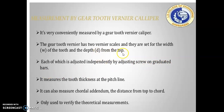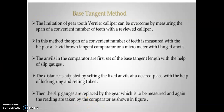The depth of the screw is calculated by calculations. Gear tooth vernier measures tooth thickness at the pitch line and can also measure the addendum distance from the top. It is only used to verify theoretical measurements. In the base tangent method, the limitations of gear tooth vernier can be overcome by measuring a span of a convenient number of teeth with a micrometer caliper.